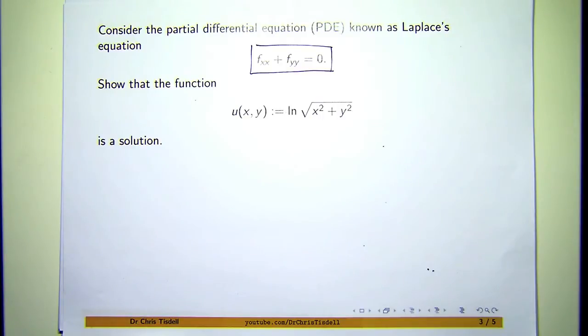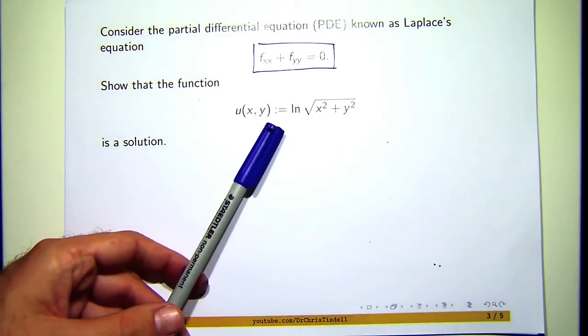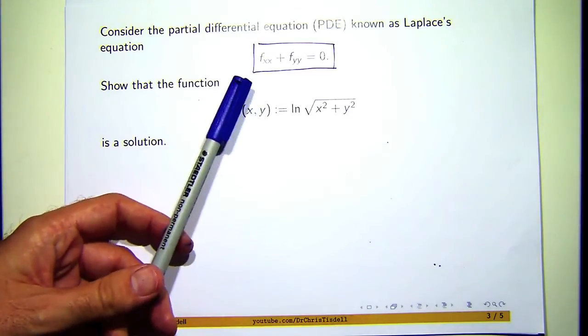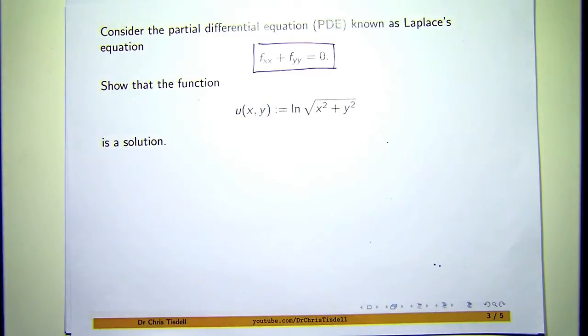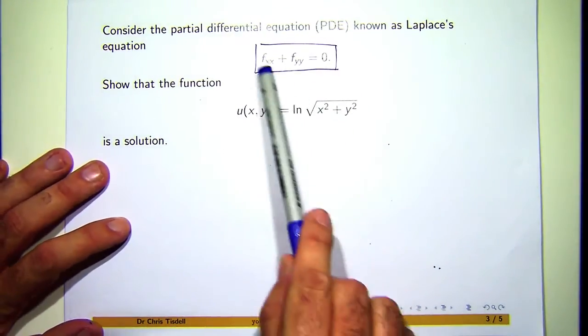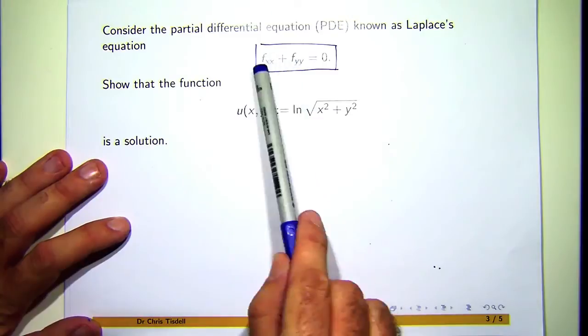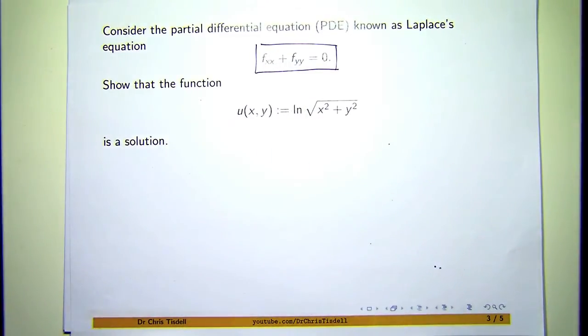Now, what do we mean by a solution? Well, we mean that this function here makes this equation balance or hold. So, in other words, if I was to compute the partial derivatives of this function that appear up here, and add them together, I should get zero.